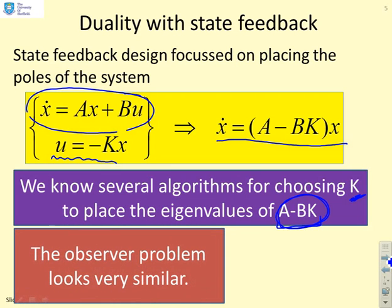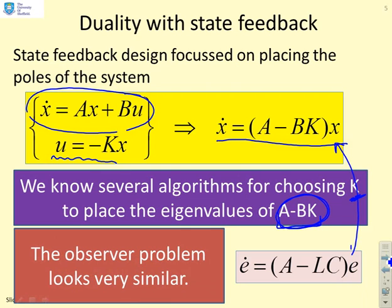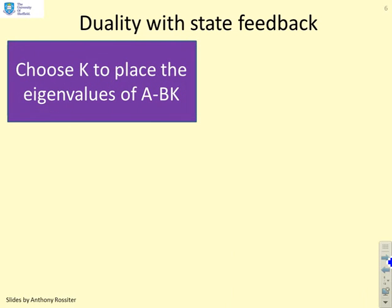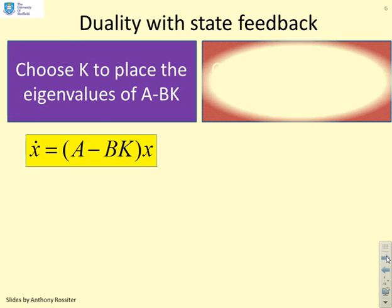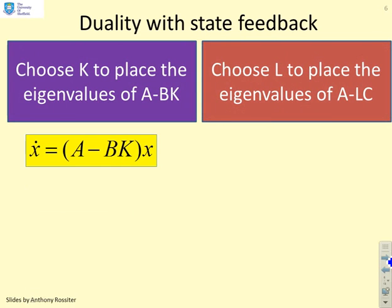The observer problem looks quite similar. If you look at the observer dynamics, e dot equals A minus LCe, and you look at these two, they look like quite similar problems. So that's where duality comes from. The feedback problem is choose K to place the eigenvalues of A minus BK. The observer problem is choose L to place the eigenvalues of A minus LC.